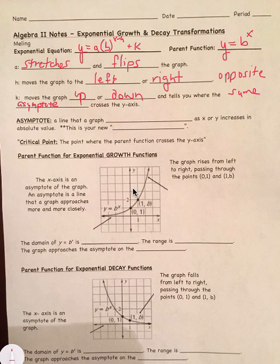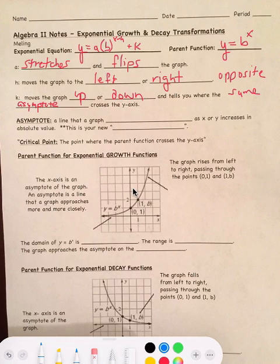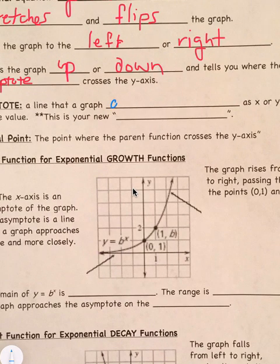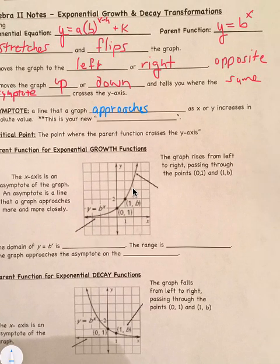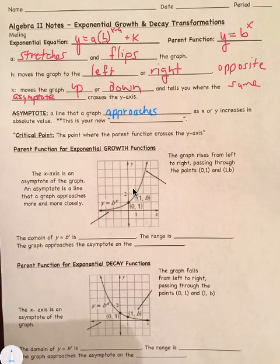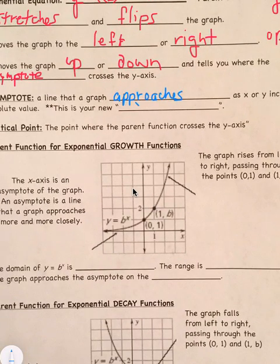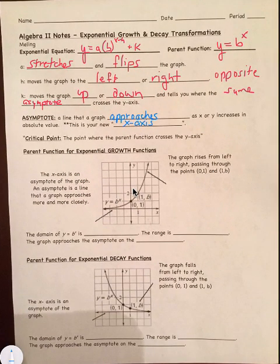So the asymptote is a line that a graph approaches as x or y increases in absolute value. For these, this is your new x-axis. So we treat the asymptote kind of like it's an x-axis going straight across like this.